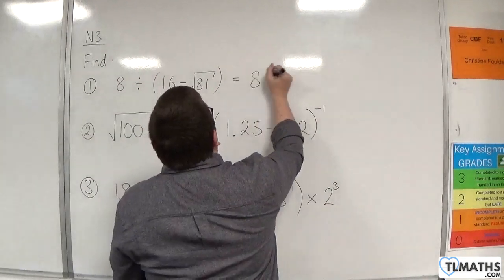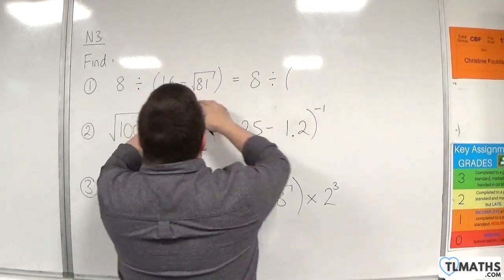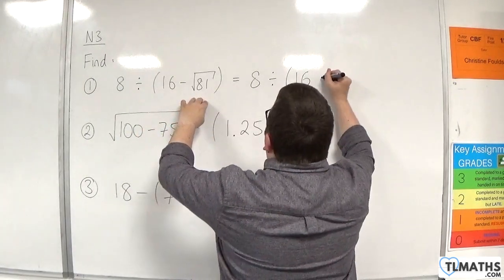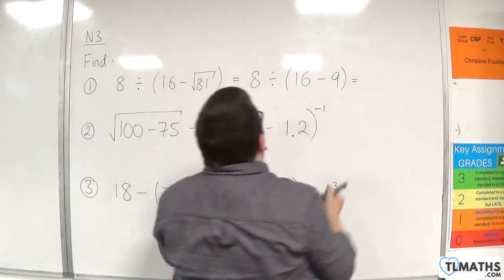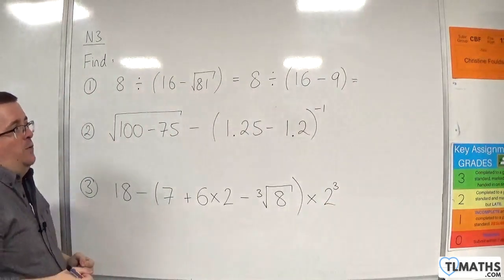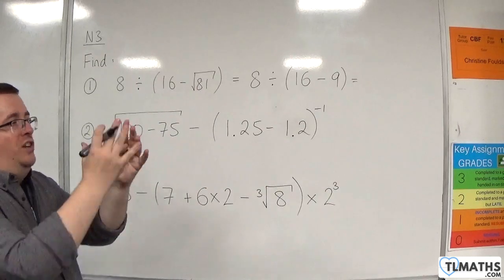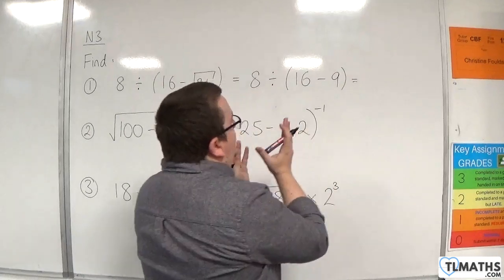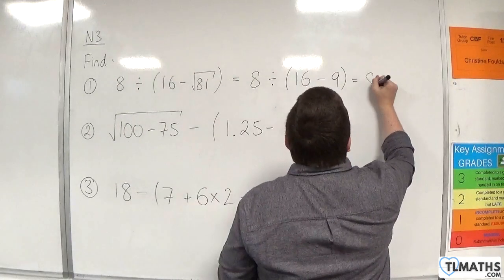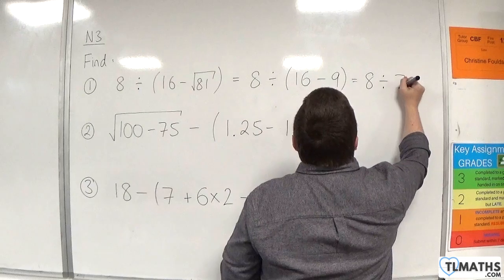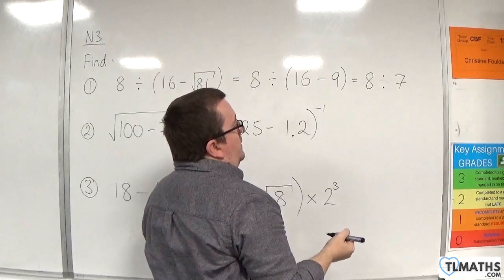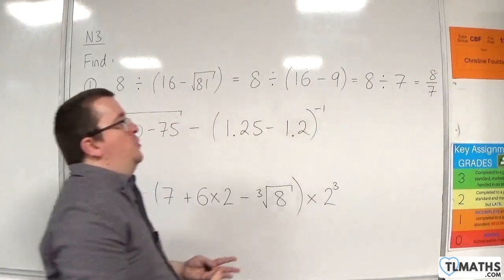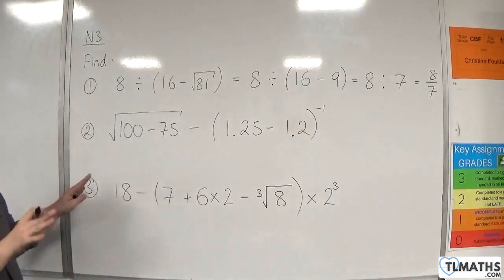We've got 8 divided by, inside the bracket, 16 take away the square root of 81, which is 9. So we have 8 divided by 16 take away 9. We've still got to deal with what's in that bracket, so 16 take away 9, which is 7. We've got 8 divided by 7, which is 8 sevenths. I'm going to write that just as a fraction, and that's as far as I go.